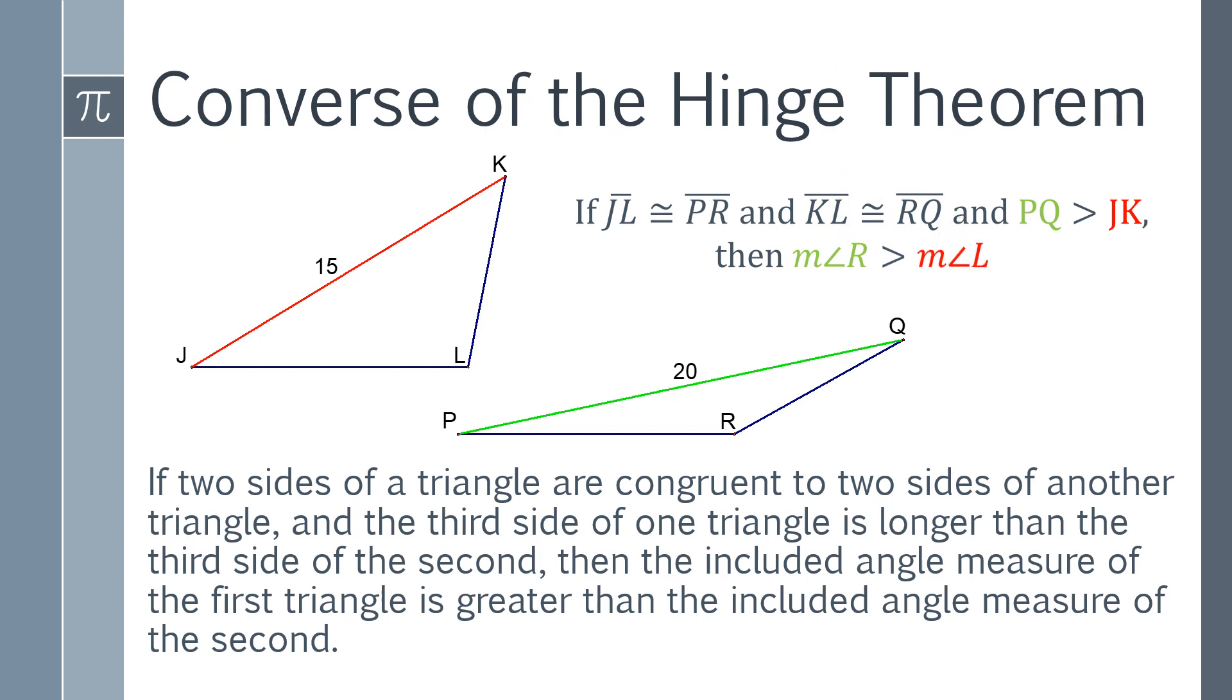Okay, so if two sides of a triangle are congruent to two sides of another triangle, and the third side of one triangle is longer than the third side of the second, then the included angle measure of the first triangle is greater than the included angle measure of the second. It's a long way of saying this: this is larger, this is the larger one, this is smaller, right? Keeping in mind that these are congruent. So that being the case, this angle R is larger and this angle L is smaller. That's all this is saying.